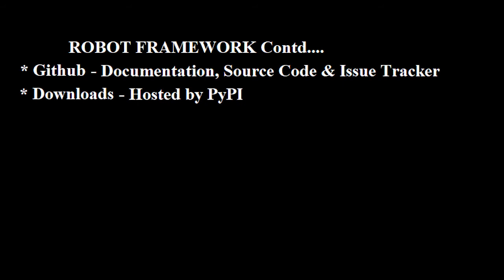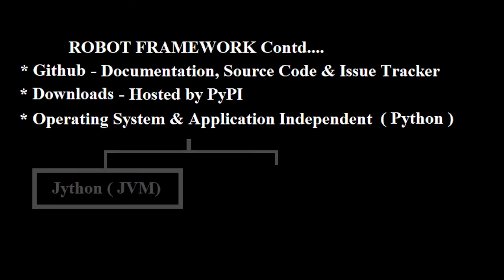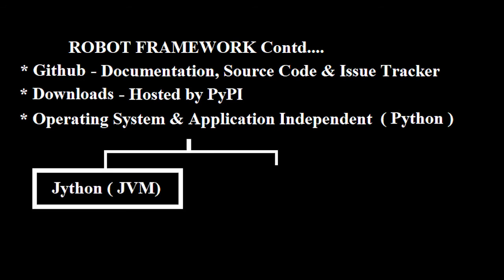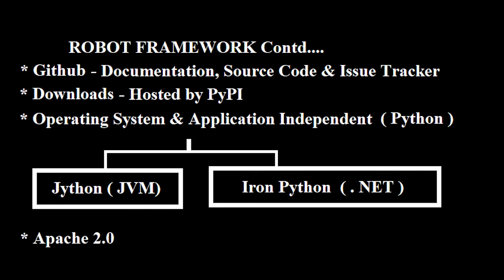The most important advantage of Robot Framework is that it is operating system and application independent. The core framework is implemented using Python and also runs on Jython, or the Java Virtual Machine, and IronPython or .NET. Robot Framework itself is open-source software released under Apache License 2.0, and most of the libraries and tools in the ecosystem are also open-source.